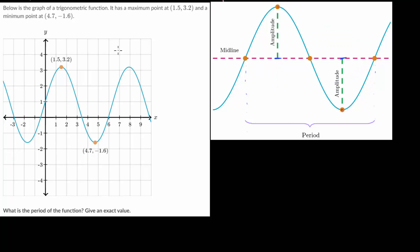For this example problem, we were given this trigonometric function, this sinusoidal curve, which could be either the sine or the cosine function. We are told it has a maximum point at this coordinate point here and a minimum point at this coordinate. So we have this point here and this point here.